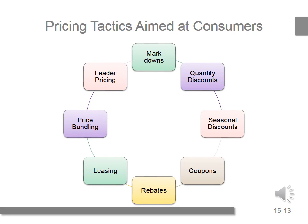Students, what we've been discussing are pricing strategies, which are a long-term approach to setting prices broadly in an integrative effort across all the firm's products, based on the five core components — company objectives, cost, customers, competition, and channel members — from Chapter 14. Tactics, on the other hand, offer short-term methods focused on select components. Pricing strategies are long-term and pricing tactics are short-term. There are many examples of pricing tactics aimed at customers, including markdowns, quantity discounts, seasonal discounts, coupons, rebates, leasing, price bundling, leader pricing, and price lining.